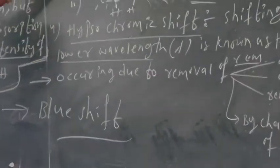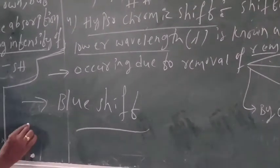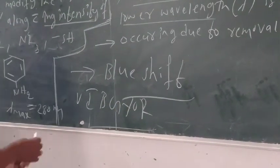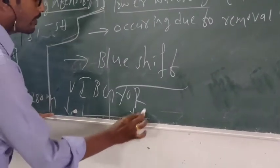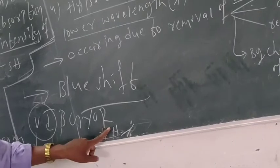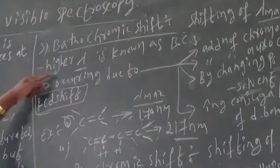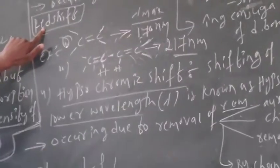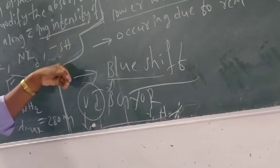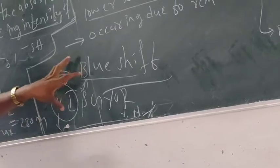Hypsochromic shift is also known as blue shift. We know visible light has colors: violet, blue, green, yellow, orange, red. Red color has a higher wavelength, while blue color has a lower wavelength. Bathochromic shift is towards higher wavelength — so it is called red shift. Hypsochromic shift is towards lower wavelength — so it is called blue shift.